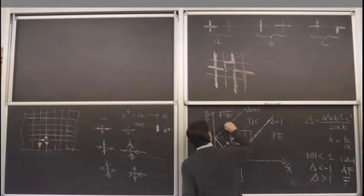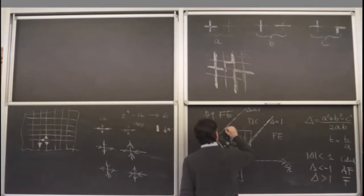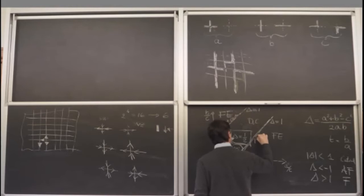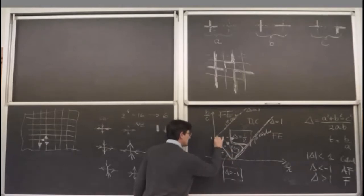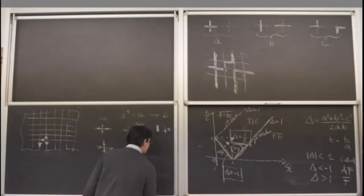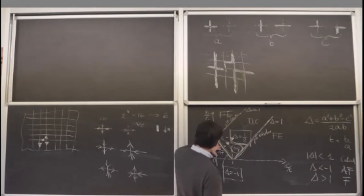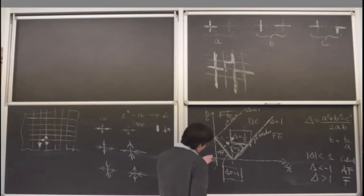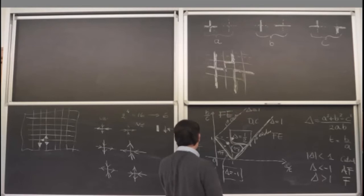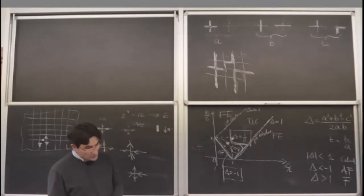The lines separating the ferroelectric and critical regions correspond to first-order phase transitions. The line delta equal minus one, separating the critical and antiferroelectric regions, is instead a Kosterlitz-Thouless-type transition: the derivative of the free energy across this line is continuous together with all its derivatives. This is sometimes called a KT or topological transition, which may have already been seen in the XY model.